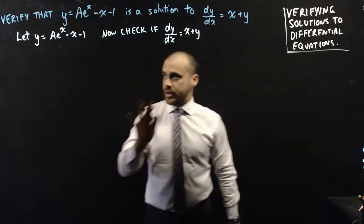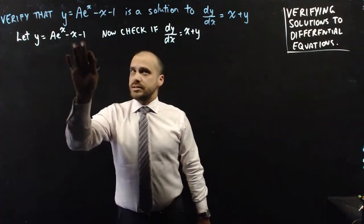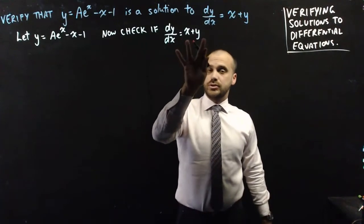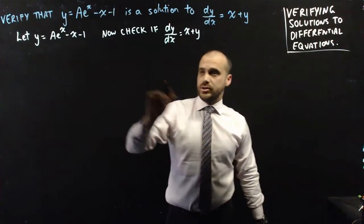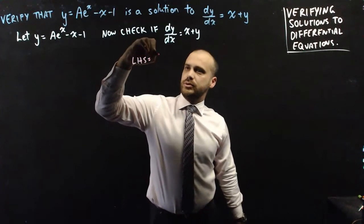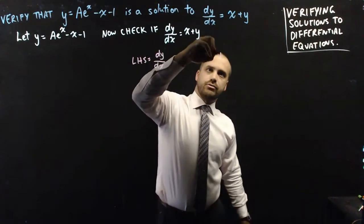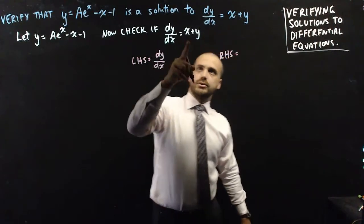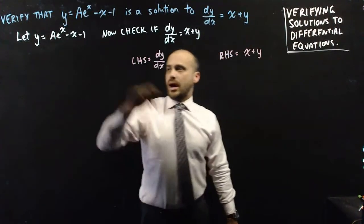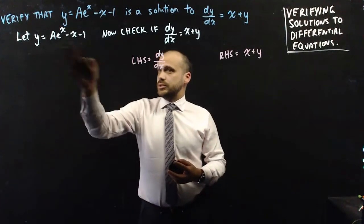I always find this a bit hard to wrap my head around. We're letting y be this, and we're going to check that the left-hand side is equal to the right-hand side in this equation. So the left-hand side is dy/dx, and the right-hand side is x plus y, where we think y is equal to ae to the x minus x minus 1.